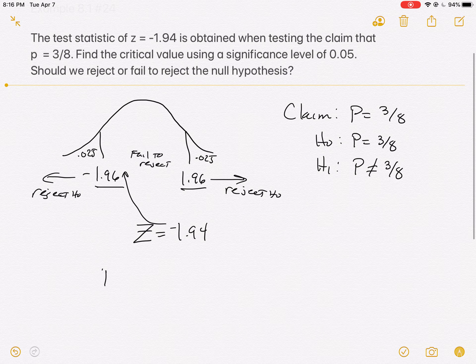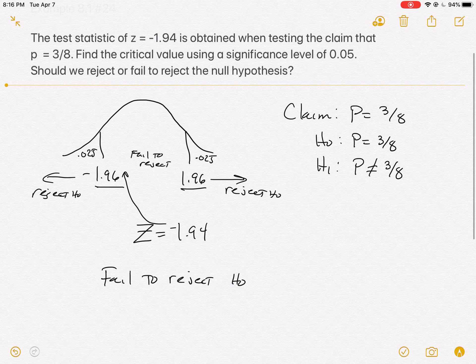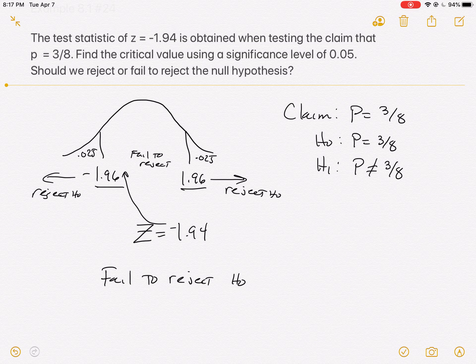So we're going to fail to reject the null hypothesis, meaning that there's not enough data to support or warrant rejection of the null hypothesis. We cannot say that it's not 3/8, and therefore we have not established our claim, and we're failing at that goal. So it is a distance away, but it's not far enough away for us to know that it's definitely not 3/8. And so that's the situation that we're in, in a two-tail type of test.